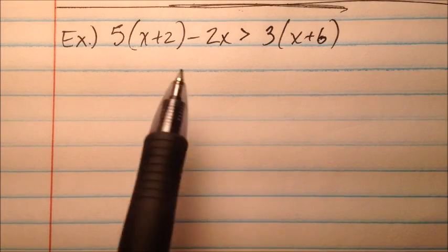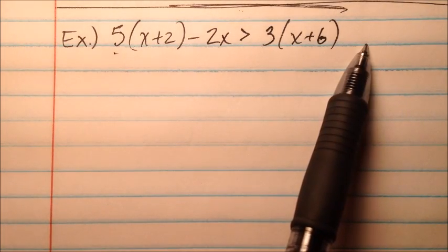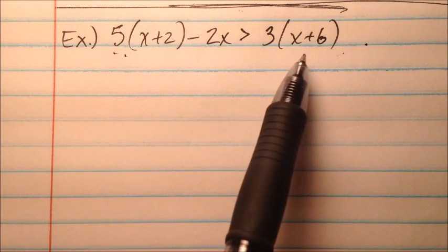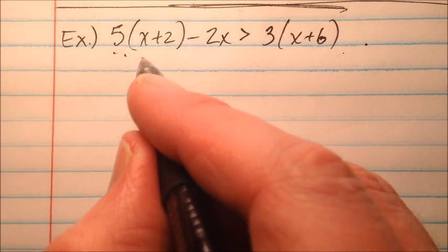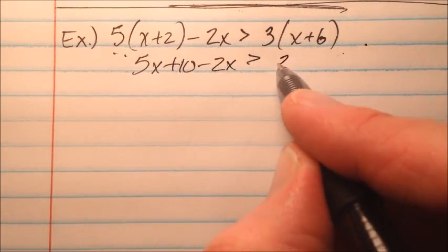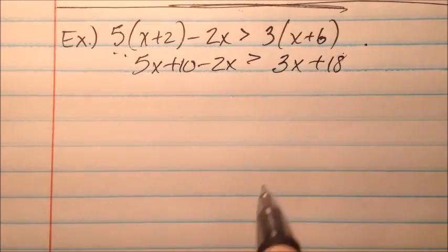Okay, in our second example, we have another inequality here. So again, like the last one, I'm going to go ahead and use the distributive property and combine like terms. So 5x plus 10 minus 2x is greater than 3x plus 18.